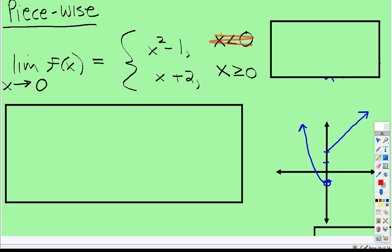the only part of the graph that we care about are the values of x that are less than zero. So this would be that graph right there.